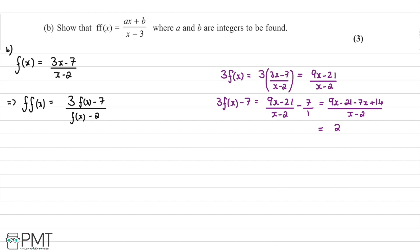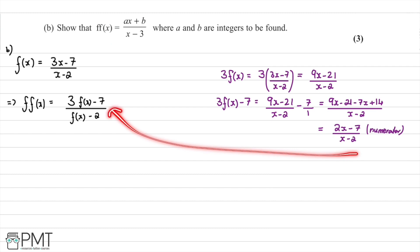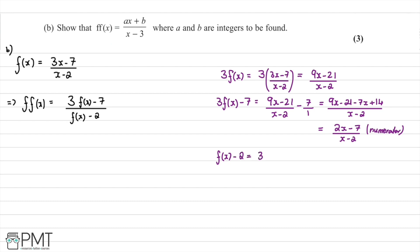So the numerator simplifies to (2x - 7) / (x - 2). For the denominator, f(x) - 2 = (3x - 7)/(x - 2) - 2/1 = (3x - 7 - 2(x - 2)) / (x - 2) = (3x - 7 - 2x + 4) / (x - 2) = (x - 3) / (x - 2).